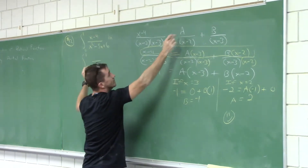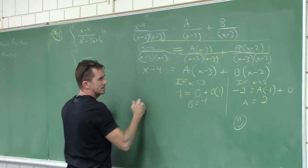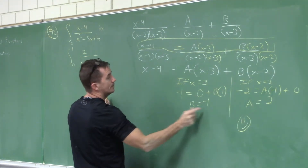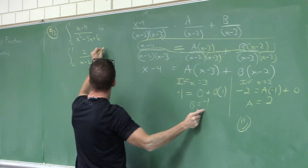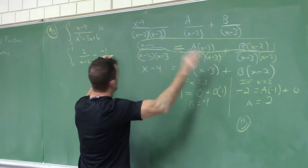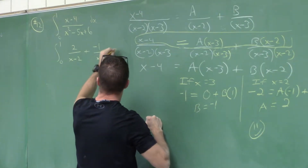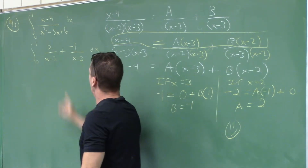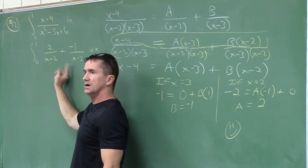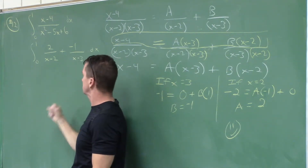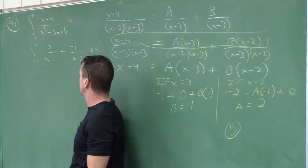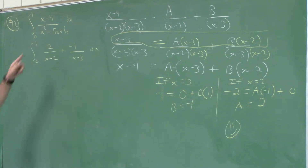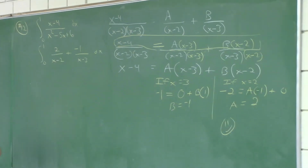A over x minus 2 — that's 2. Plus B over 1. We'll plug those numbers in and finish it up. There are numbers here, so we plug those numbers in.